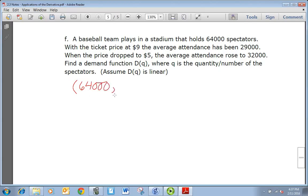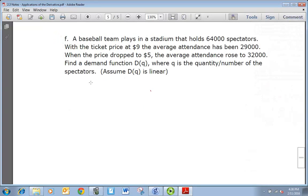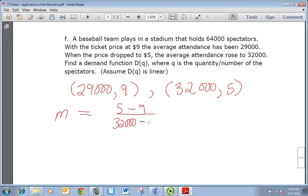So the number of spectators is your independent and the price is dependent. So you get your two points: 29,000 for $9 and the other coordinate is 32,000 for $5. So we find m. m is going to be 5 - 9 over 32,000 - 29,000. Well that's equal to -4 over 3,000, which reduces to -1 over 750.